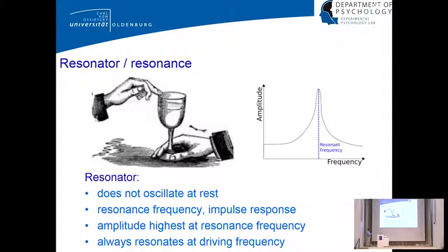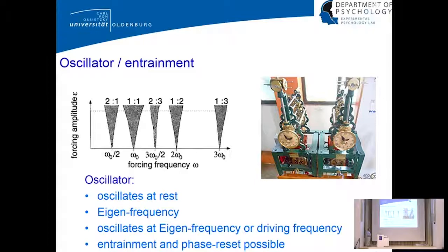A resonator has a resonance frequency but cannot show entrainment by definition — it lacks an eigenfrequency. It always oscillates at the driving frequency in steady state. An oscillator, like a pendulum clock — Christian Huygens first demonstrated oscillation and entrainment — does oscillate at rest, has an eigenfrequency, and can switch between two regimes: its eigenfrequency when left alone, or the driving frequency when the driving is close enough. This is the Arnold tongue. The oscillator can show entrainment and phase reset; the resonator cannot.